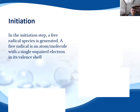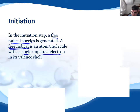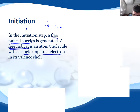Let's look at each of these steps in detail. Firstly, the initiation step. The first thing we need to do is generate a free radical species. The definition of a free radical is an atom or molecule with a single unpaired electron in its valence shell — it doesn't have that full complement, that octet rule. A simple example: carbon should be bonded to four different atoms, but if it's only bonded to three and the fourth bond is absent, it becomes a free radical.